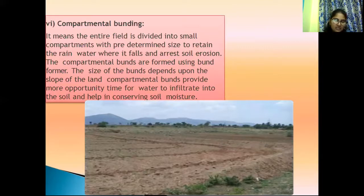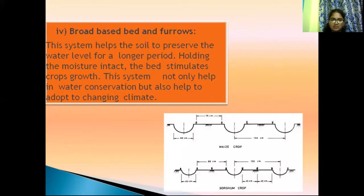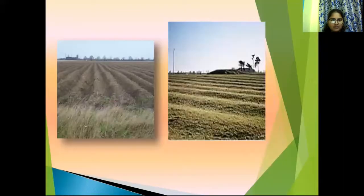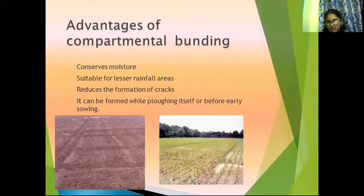These are the different soil conservation techniques, applied one by one. Any technique depends upon the area — we can go for different methods. It is not mandatory to use only one; we can go for compartmental bunding, furrowing, or broad-based bed and furrows depending on convenience. Advantages of compartmental bunding include conserved moisture, suitability for lesser rainfall areas, and reduction in the formation of cracks. It can be formed while plowing or before early sowing. Thank you.